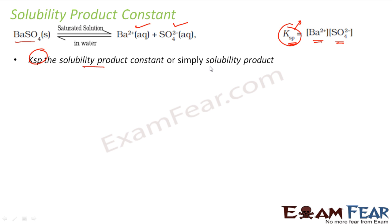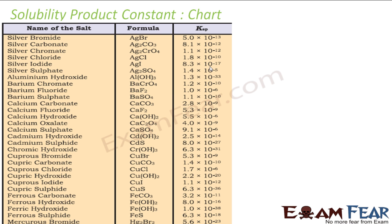Ksp is called the solubility product or solubility product constant. There is a chart listing solubility products for many chemical compounds at a given temperature. For example, silver bromide has Ksp of 5.0 × 10⁻¹³ and calcium sulfate has Ksp of 9.1 × 10⁻⁶, just as a reference table.